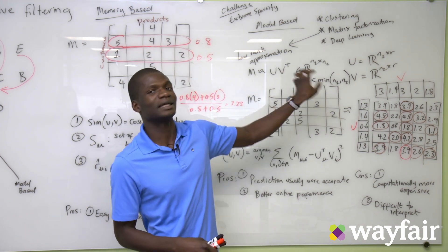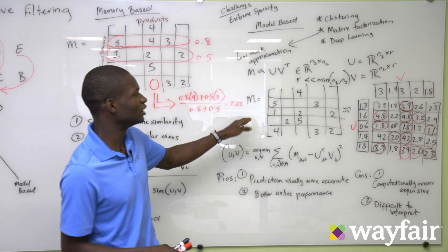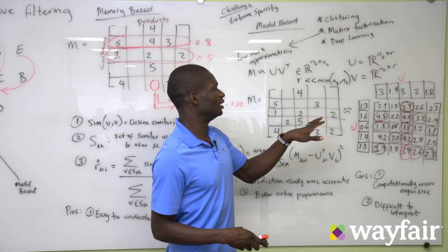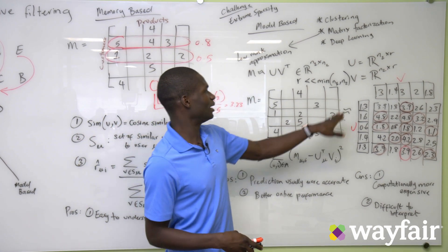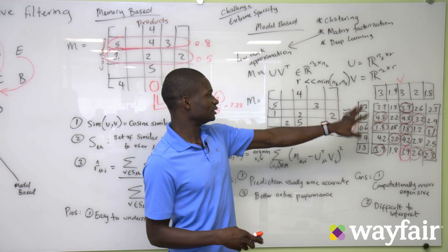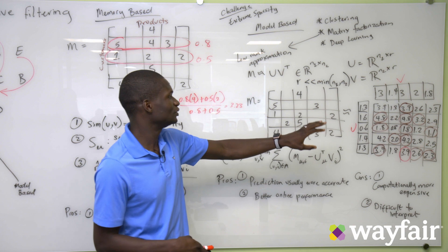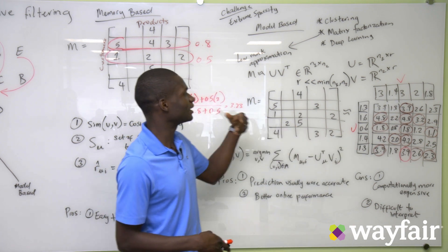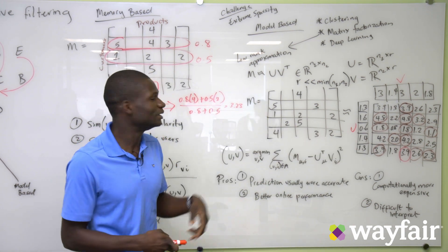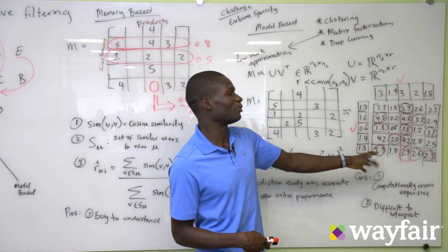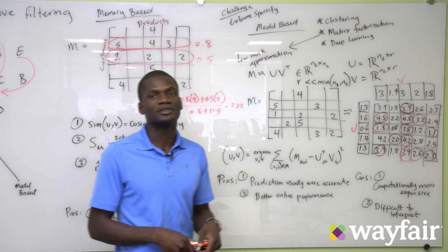Once we find the lower representation U and V, if we multiply the two matrices, we can recover values very similar to what we had in the initial M matrix. And we can make predictions. At the same time, we can complete the matrix.